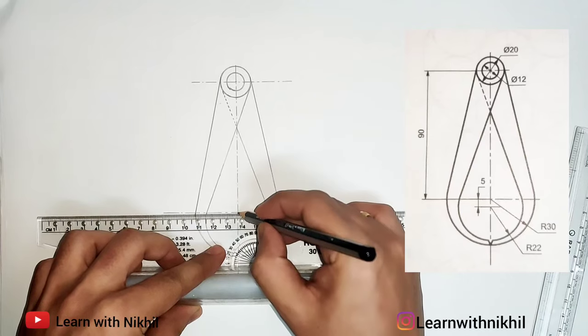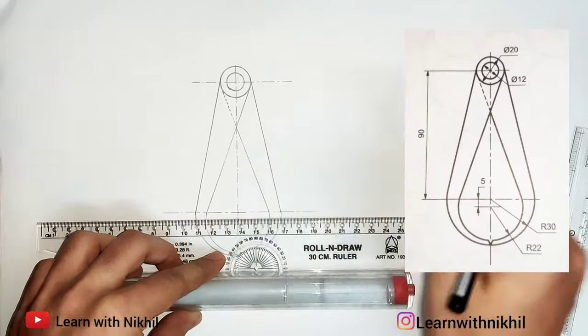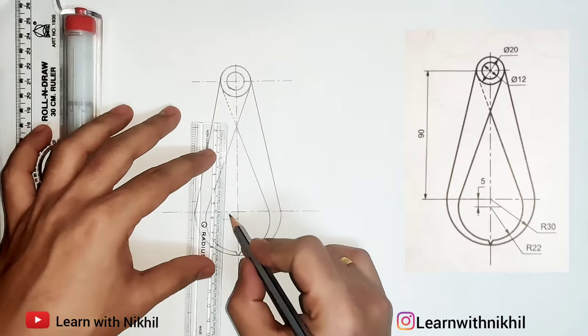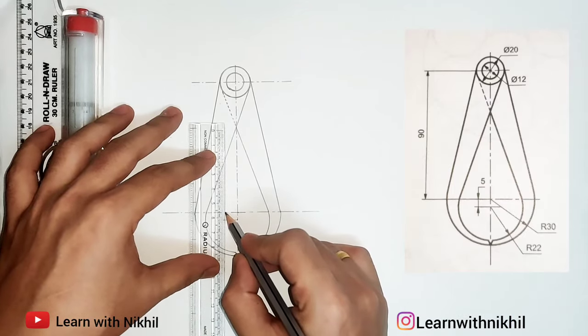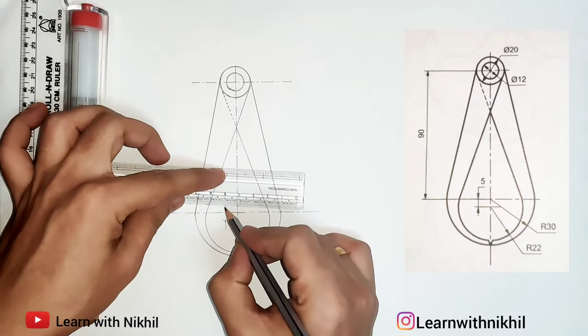Now we are totally done with the figure. We have to just mark the dimensions as shown in the question. So this height is five millimeter, so line below five millimeter and mark the diameter, then mark the dimension.